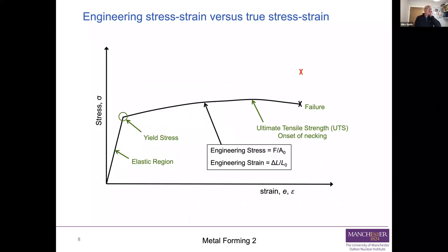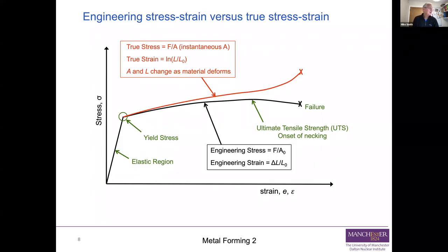Why would we want to move from engineering stress-strain to true stress-strain? On the diagram, we have the elastic region, the yield stress, the ultimate tensile strength — the stress at the highest load where necking starts — and then final failure when the load has dropped off. If we overlay true stress versus true strain, they're pretty well equivalent during elastic loading because there's little difference between true and engineering measures when strains are small. But as load and strain increase during plastic deformation, they diverge. The true stress-true strain curve is always above the engineering stress-engineering strain curve.